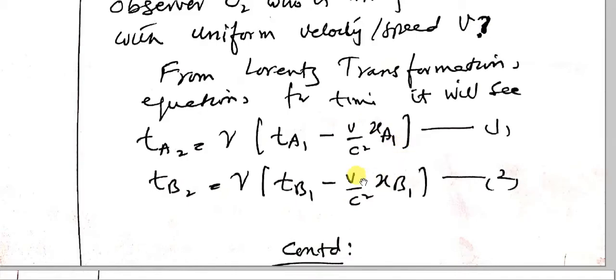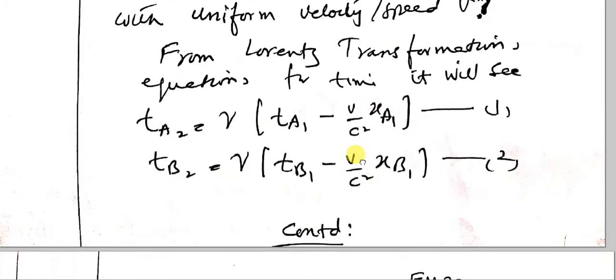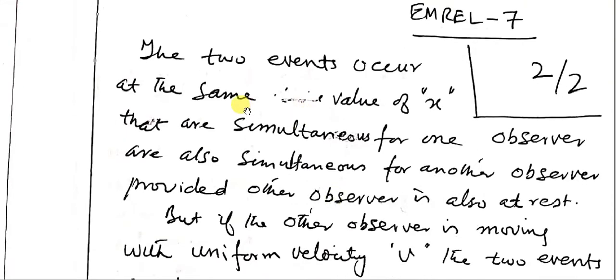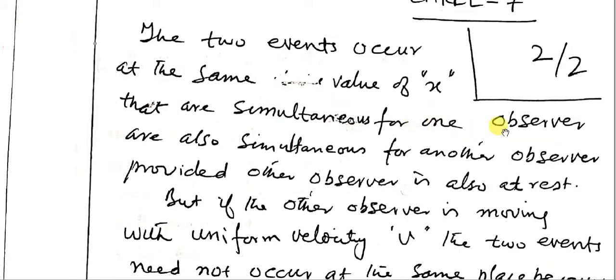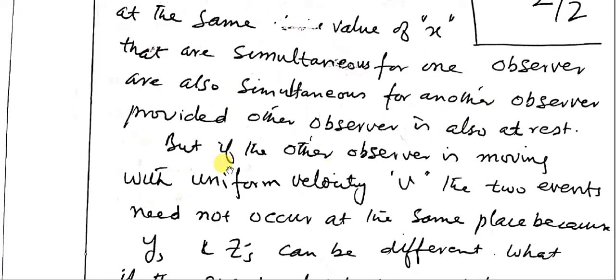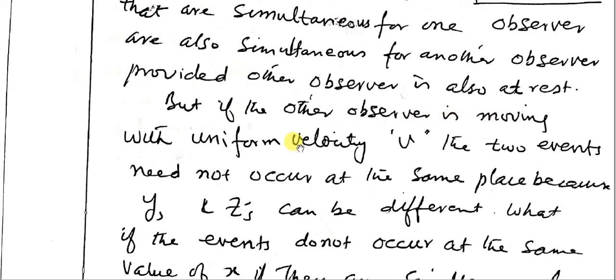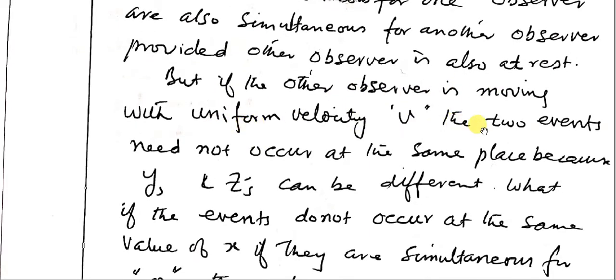v is a constant speed of reference frame 2. The two events that occur at the same time — which are simultaneous for one observer — also seem to be simultaneous for another observer, provided that other observer is also at rest.